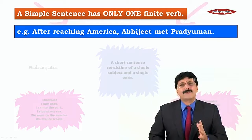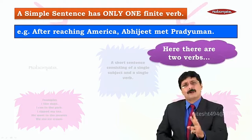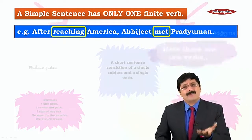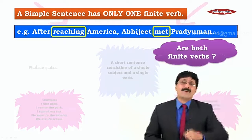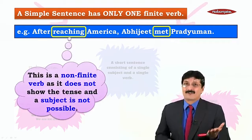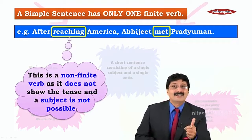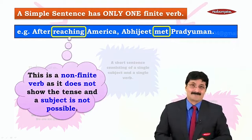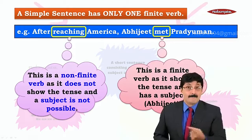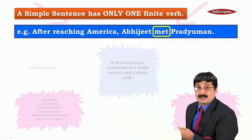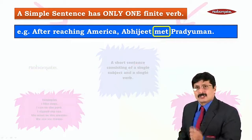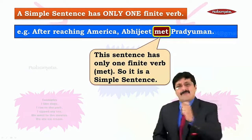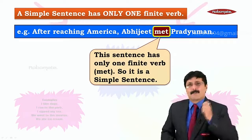My dear friends, you can see there are two verbs here — name them: 'reaching' and 'met'. But 'reaching' is not a finite verb, because 'reaching' does not have a subject and cannot have a subject. On the other hand, 'met' is a finite verb because the subject 'Abhijit' is there. So this sentence has got only one finite verb; therefore, it is a simple sentence.